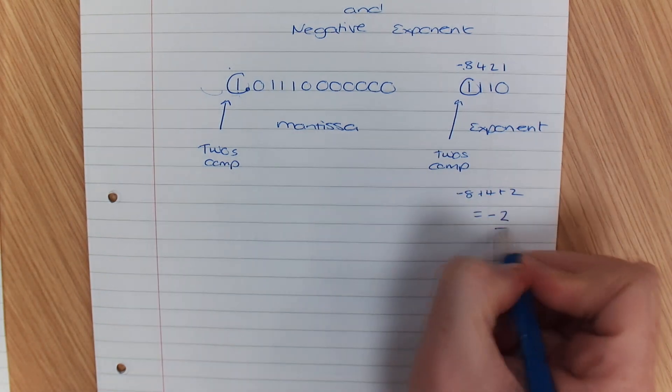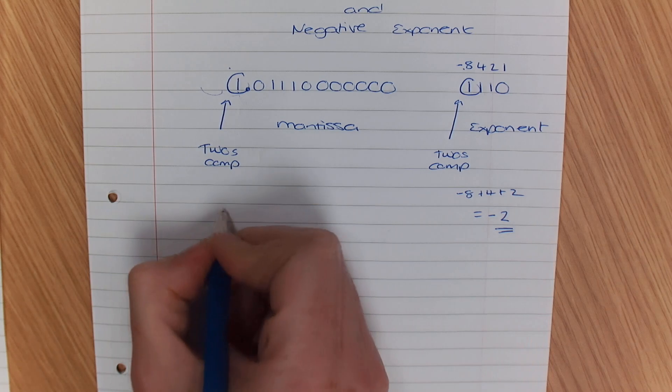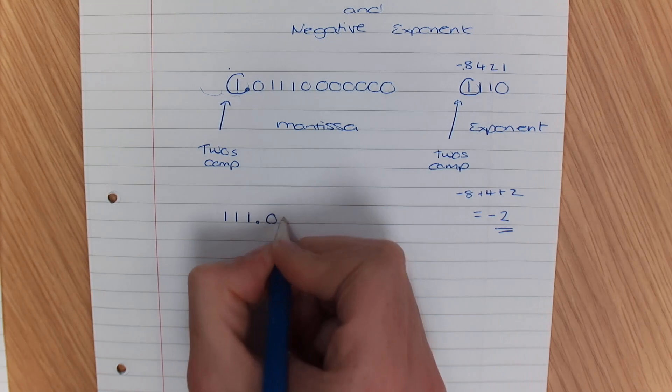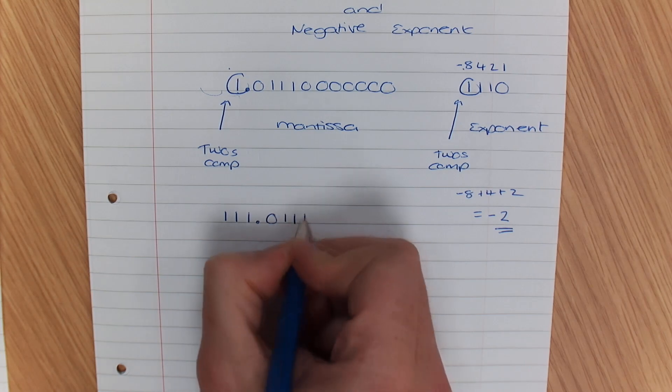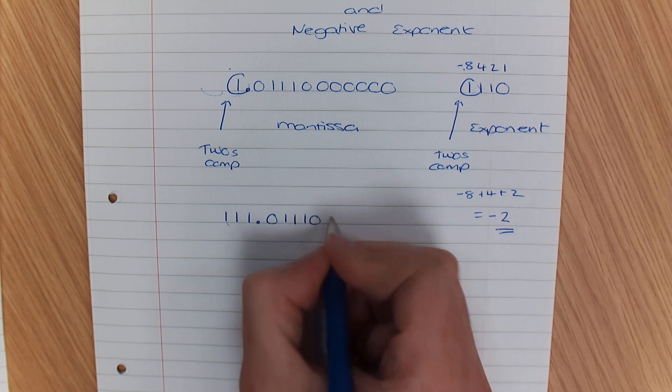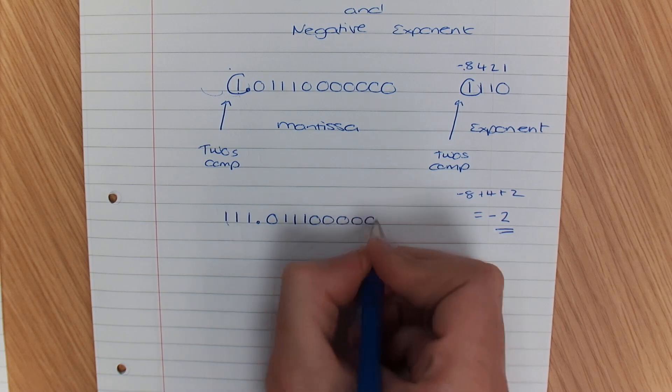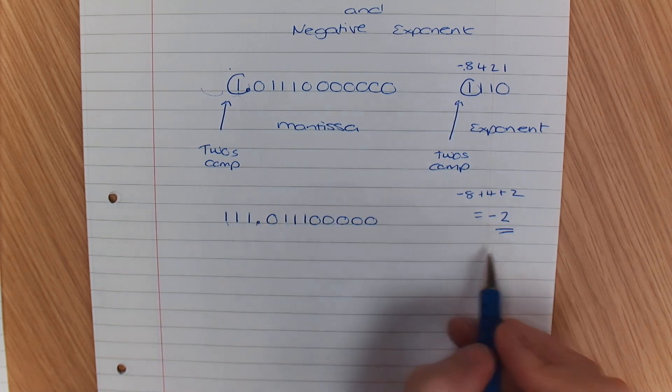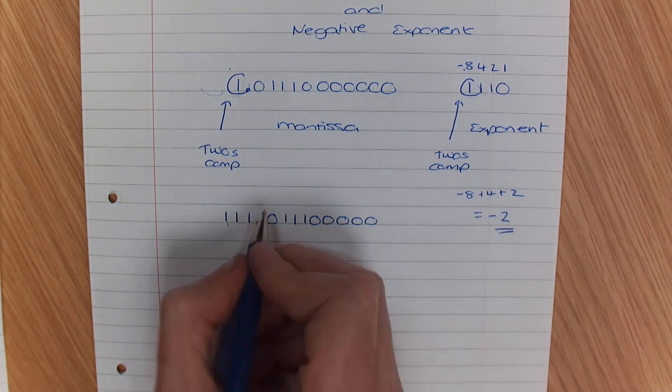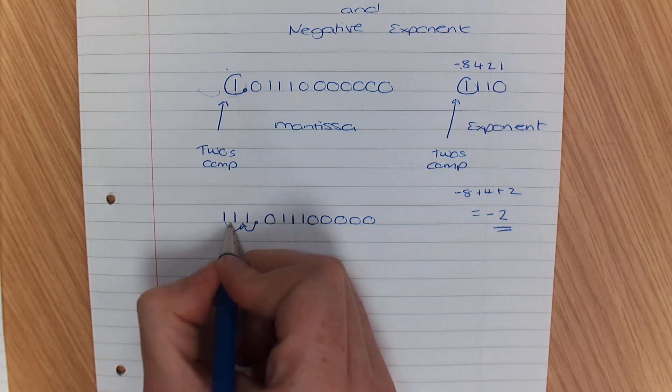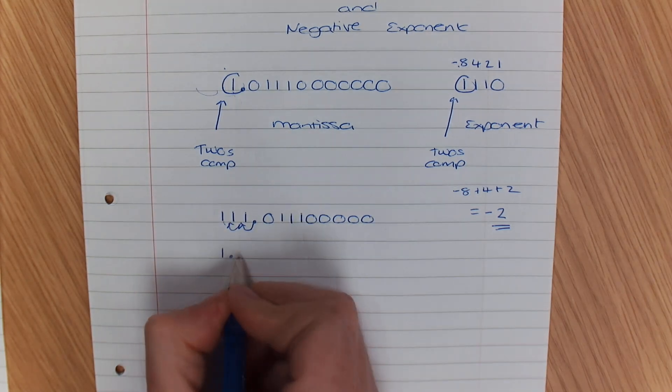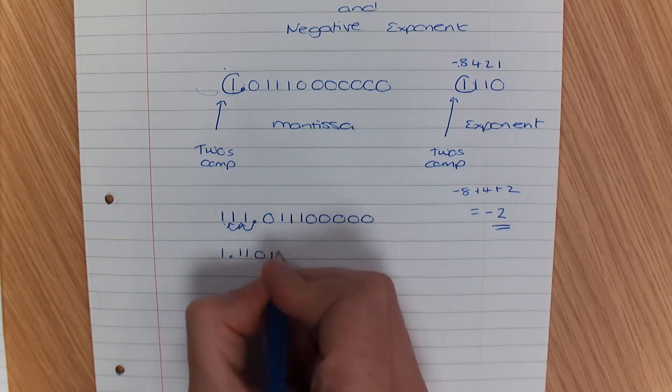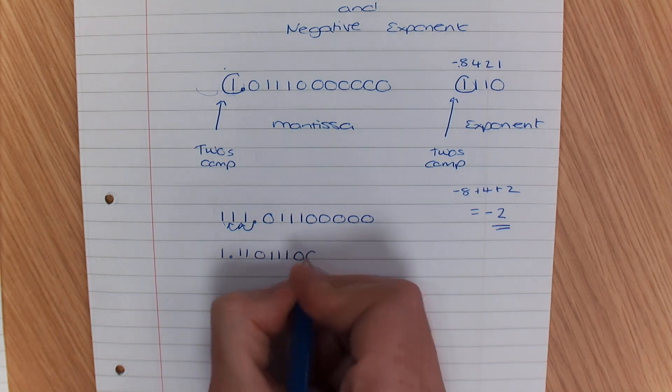So I'm going to pad it with this many 1's. So I'm going to write 1, 1, 1, 0, 1, 1, 1. So I padded it with 1's and put the decimal place in. Now I've padded it, I can move it back twice: 1, 2. So I end up with 1, 1, 1, 0, 1, 1, 1, 0, 0.